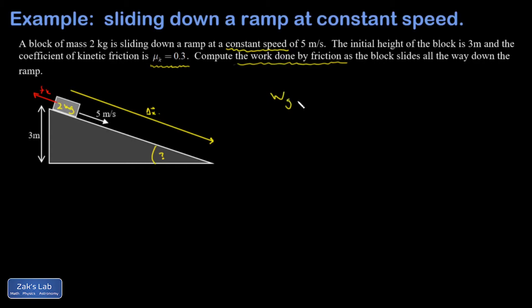Gravity is pumping energy into this block, and the work gravity does is path independent. So it doesn't matter that it's sliding sideways at the same time it's moving down. The work done by gravity would just be the force of gravity, mg, multiplied by this change in height of 3.